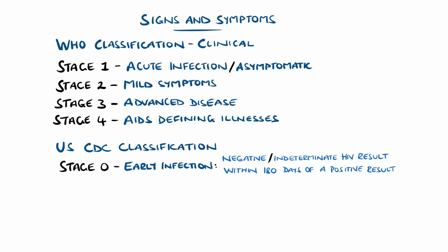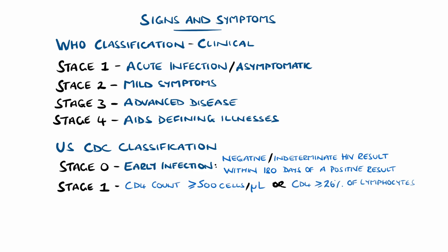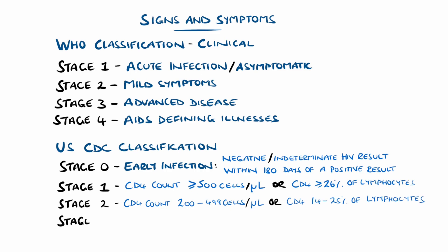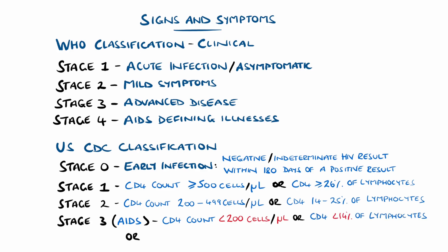CD4 counts above 500 cells per microliter, or making up more than 26% of lymphocytes, are considered stage 1. Stage 2 features cell counts of 200 to 499 cells per microliter, or between 14% and 25% of lymphocytes, while stage 3, or AIDS, features counts below 200 cells per microliter or below 14% of lymphocytes. Presence of an AIDS-defining illness automatically means a stage 3 or AIDS diagnosis, including any of the WHO stage 4 conditions as well as any tuberculosis infection, amongst others.